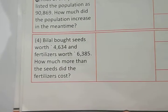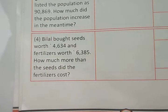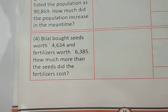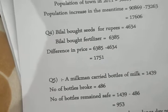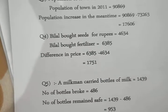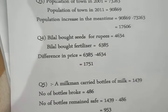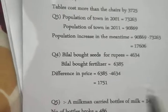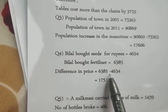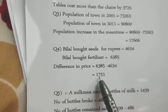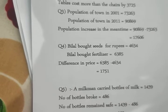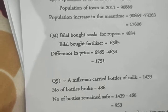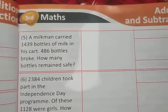Our next question: Bilal brought seed worth rupees 4634 and fertilizer worth rupees 6385. How much more does the fertilizer cost than the seed? Given: Bilal brought seed for rupees 4634 and fertilizer for rupees 6385. The difference is 6385 minus 4634, and their difference is 1751. So the price of fertilizer is more than seed by rupees 1751.